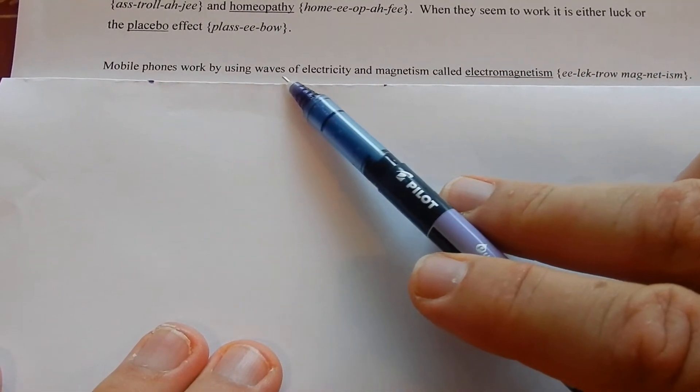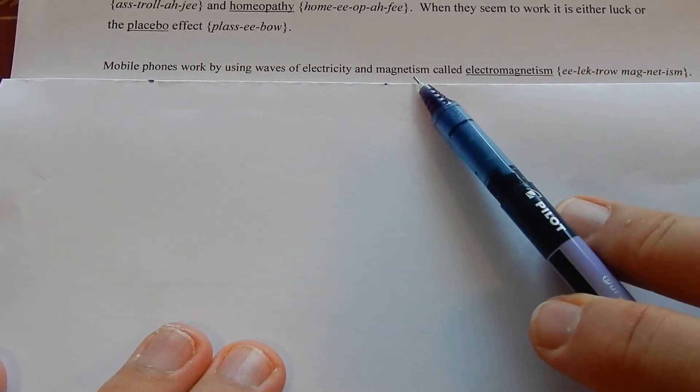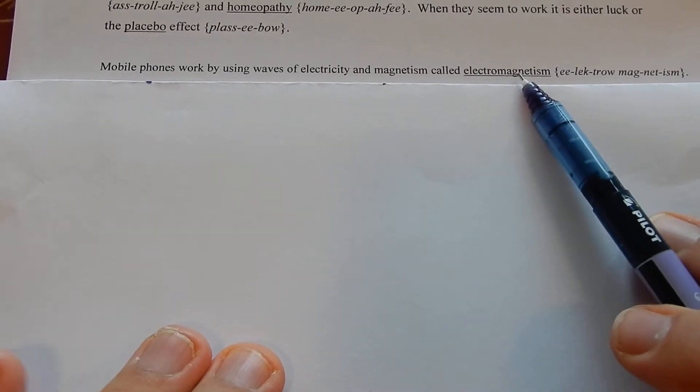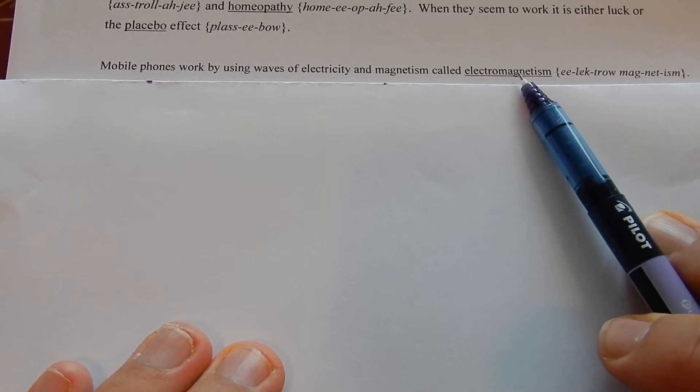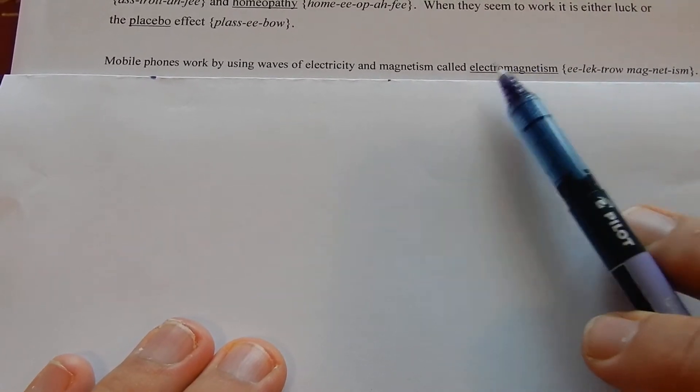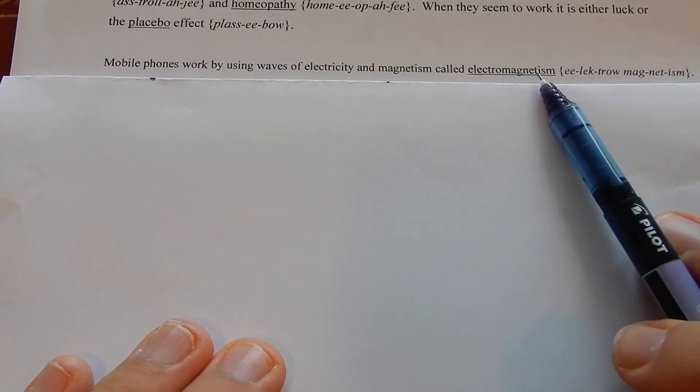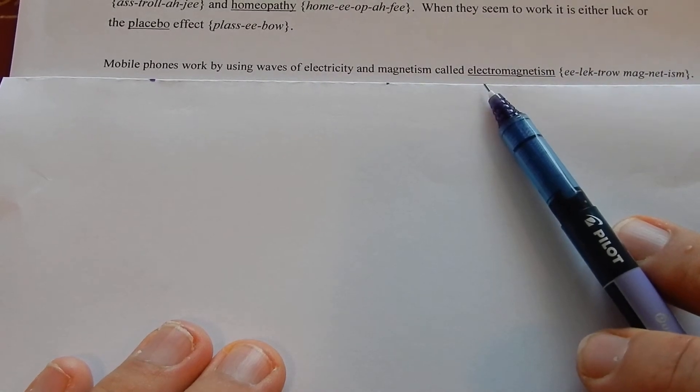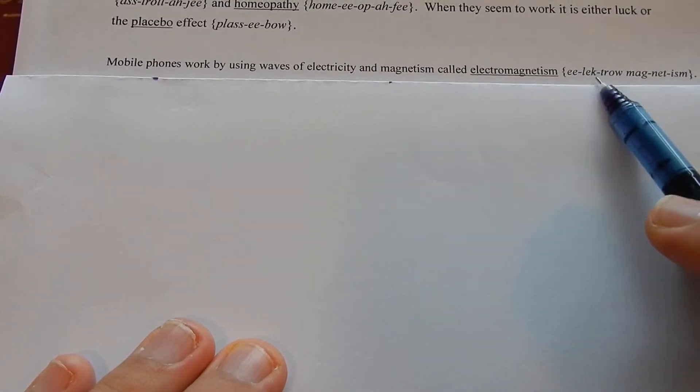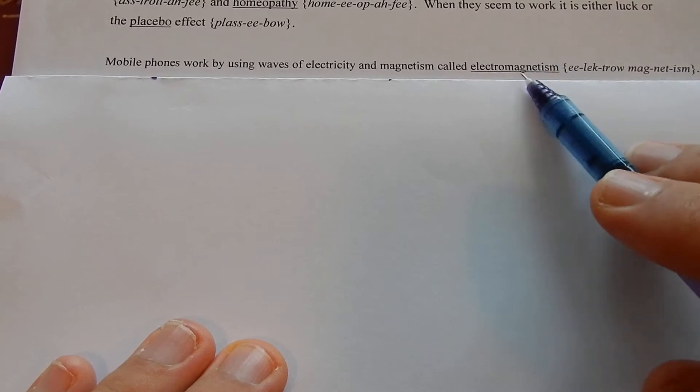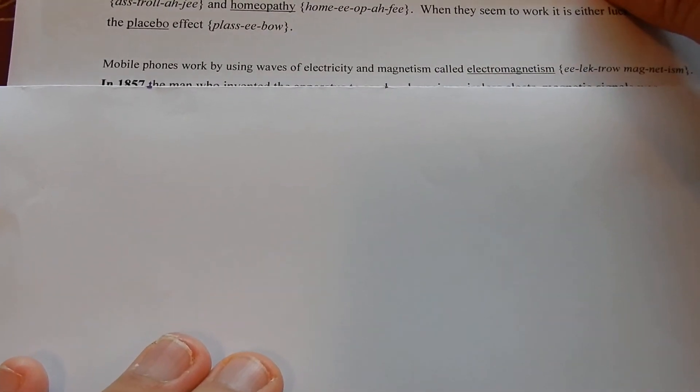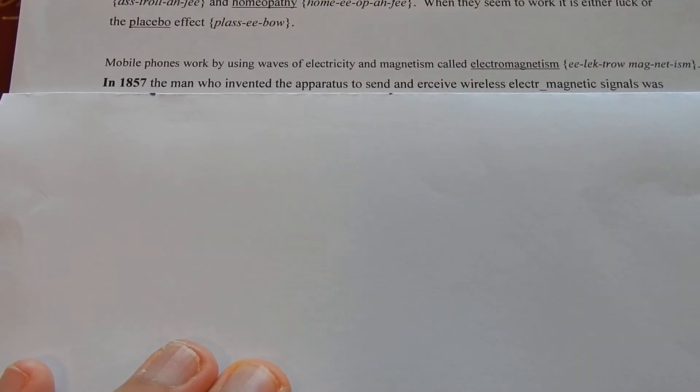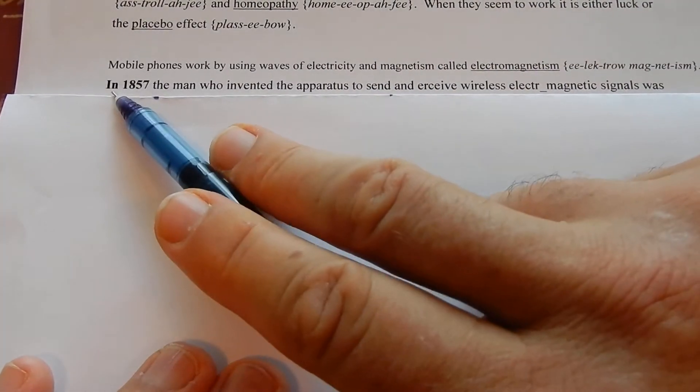Mobile phones work by using waves of electricity and magnetism called electromagnetism. We thought they were two separate sciences, and then people found out that actually electricity makes magnetism and magnetism makes electricity. That's how electric motors work - electromagnetism. Electric cars work because of electromagnetism, the magnetism making electricity and electricity making magnetism.